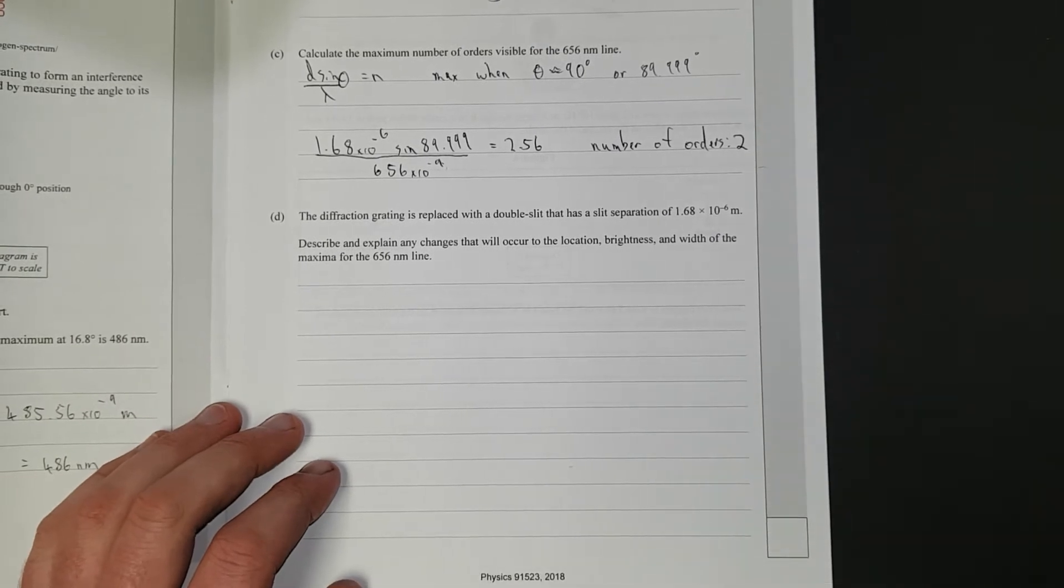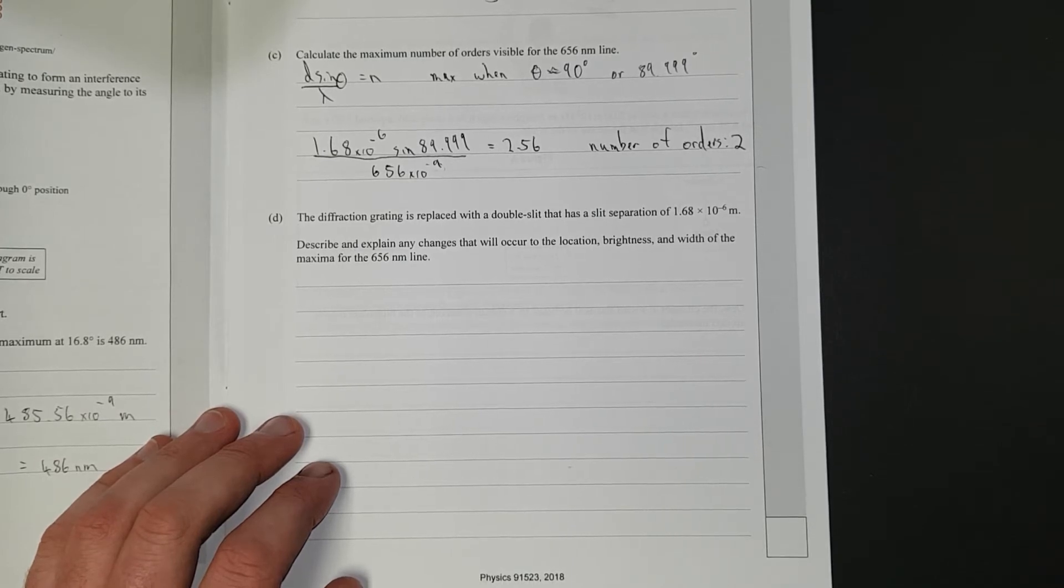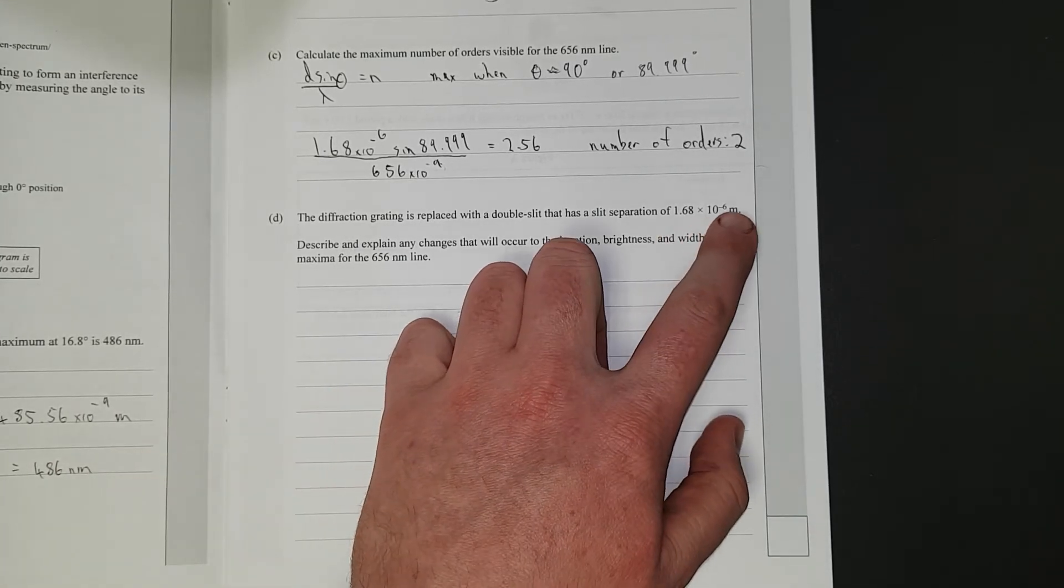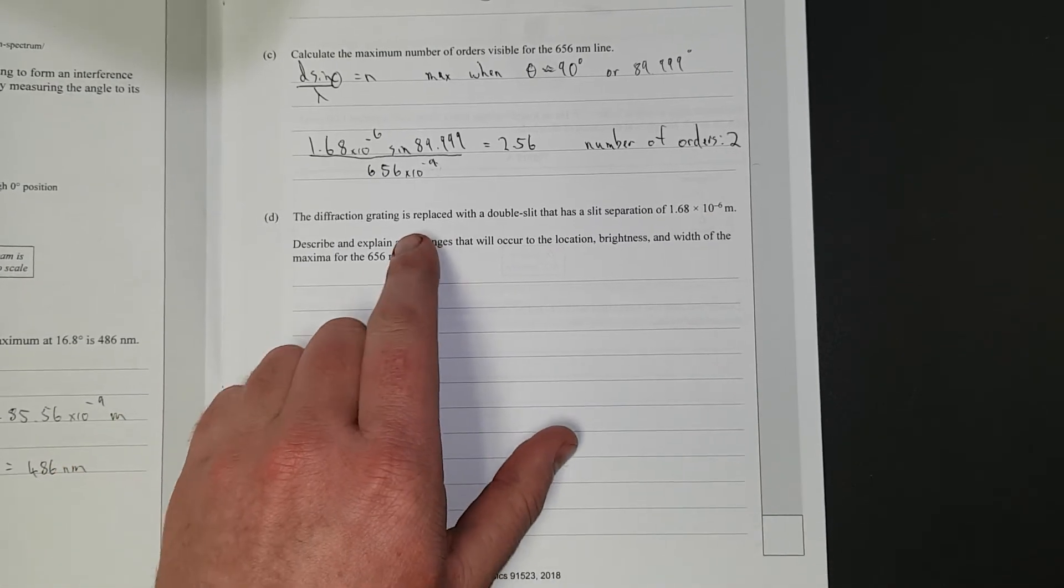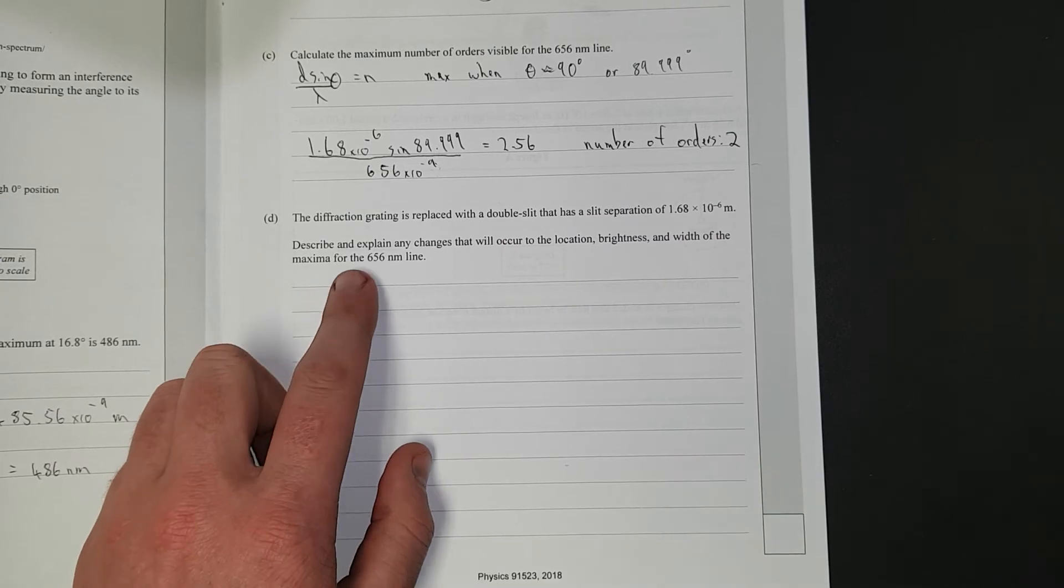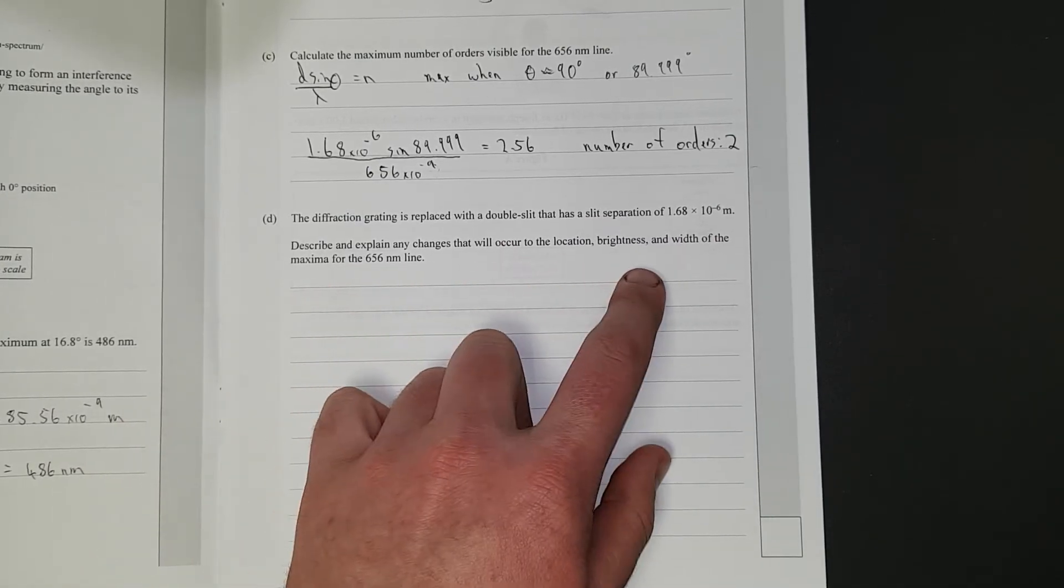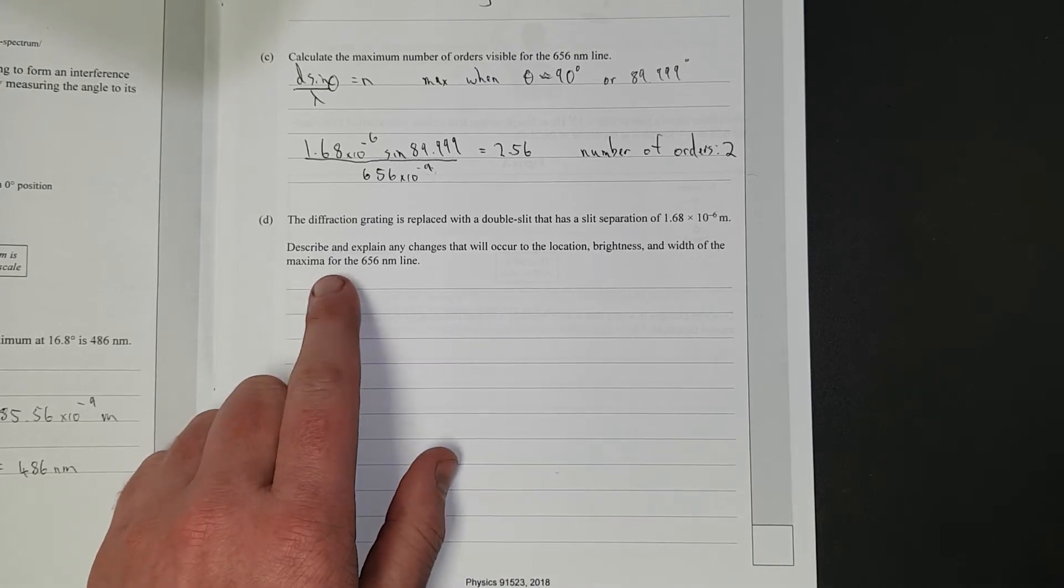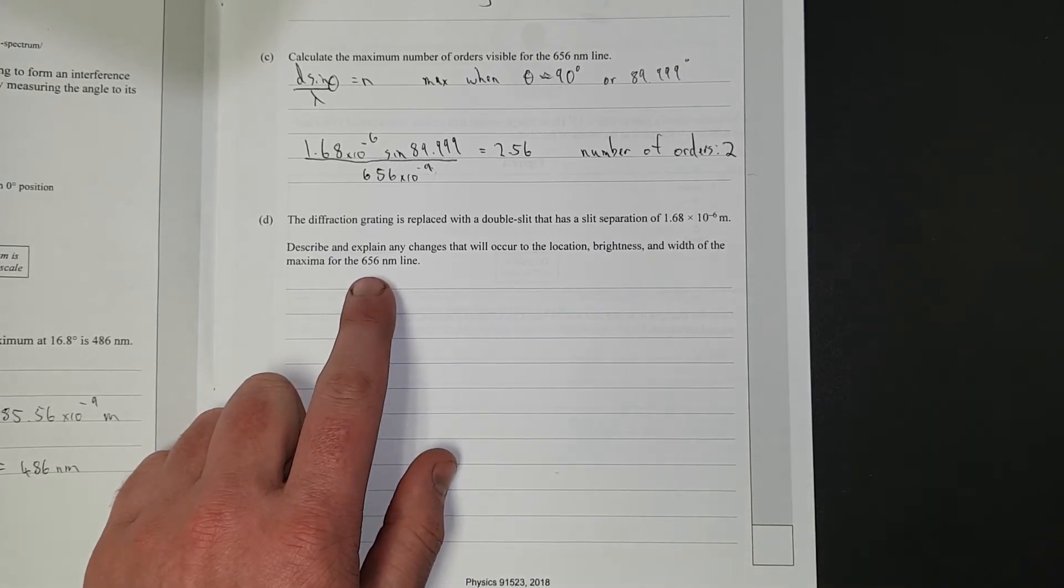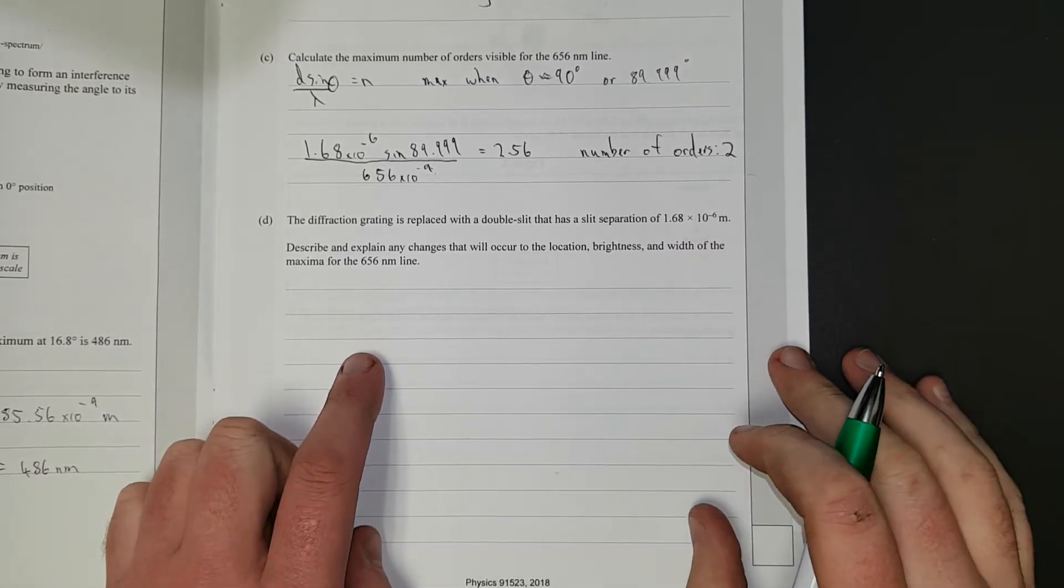The diffraction grating is replaced with a double slit that has a separation of 1.68 times 10 to the negative 6. So it's just literally, you're replacing the diffraction grating with a double slit. Same slit separation. Describe and explain any changes that will occur to the location, brightness, and width of the maxima for the 656 nanometer line, so the red line. Right, I'm going to pause the video, write a full answer, and then we'll discuss.